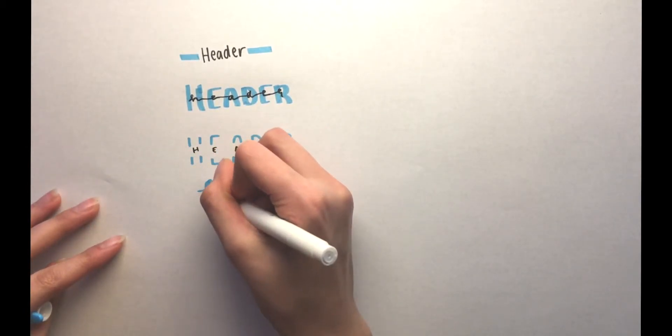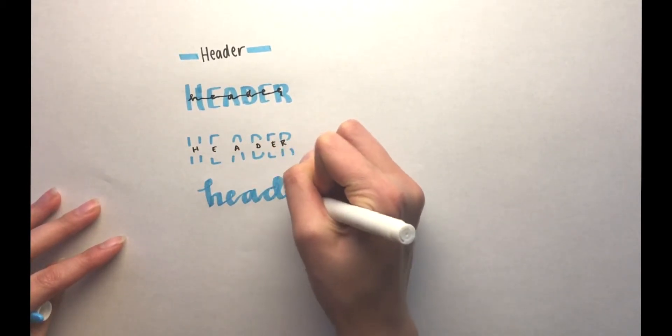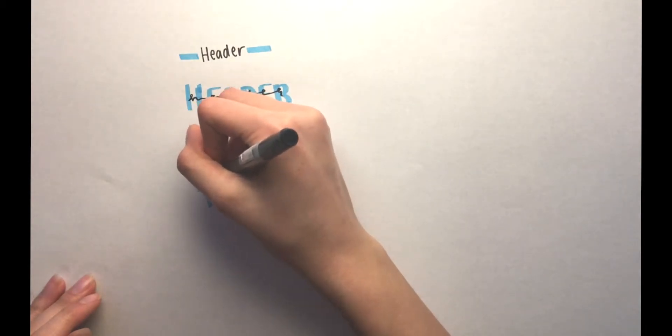Next, I am making a cursive header with highlighter on it, and then I'm going to add a black sort of shadow to it.